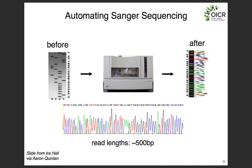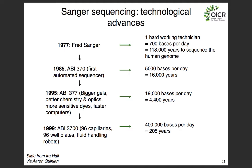One of the sequencers produced to automate this technology used fluorescently labeled nucleotides — where if you shine a laser on the nucleotide it will emit some light. Using four different fluorophores, one color per nucleotide, and separating them in a capillary tube instead of a gel, you can look at the color of each peak in what's called a trace to figure out what the DNA sequence was.